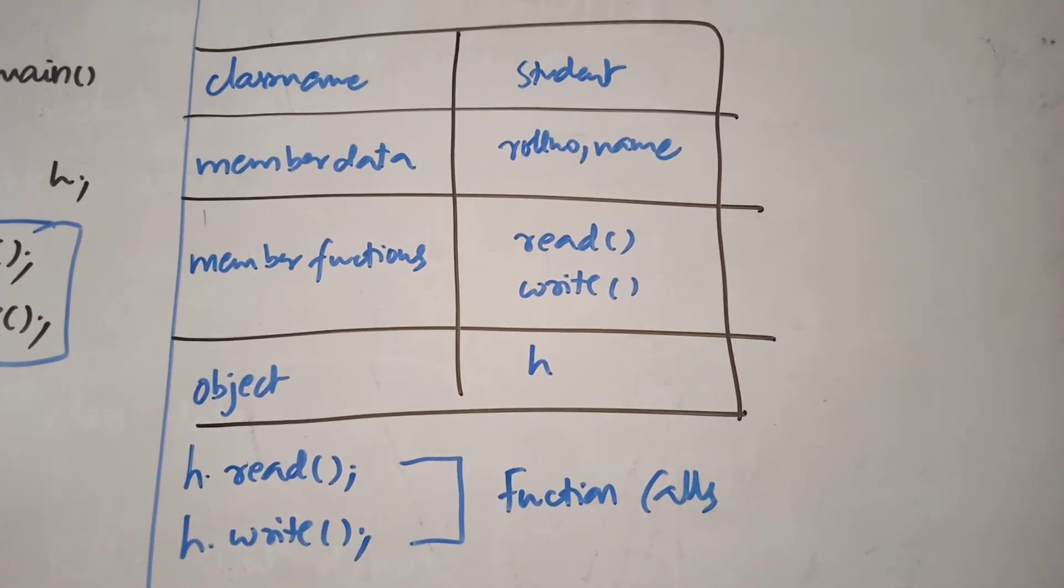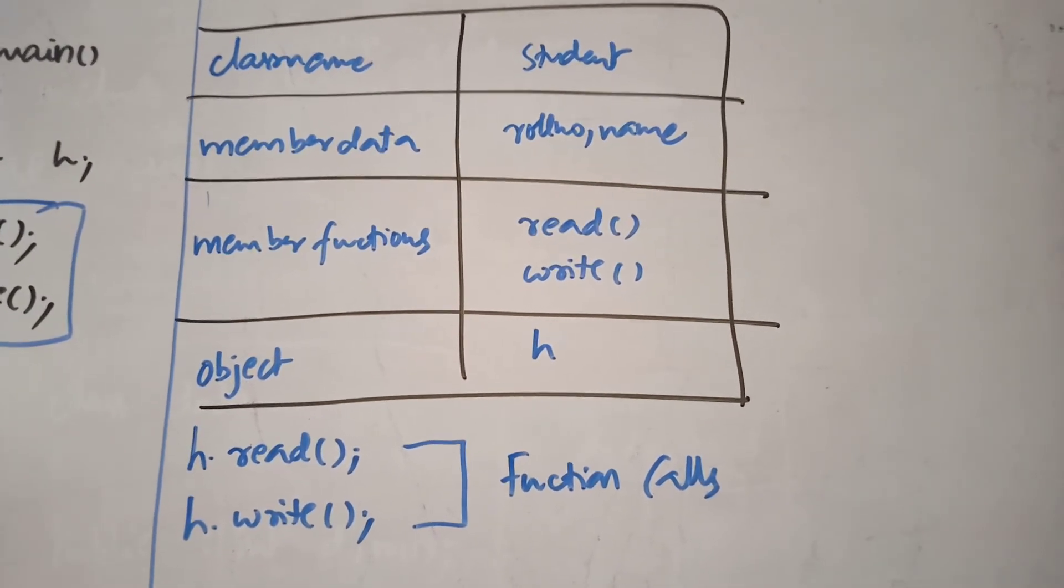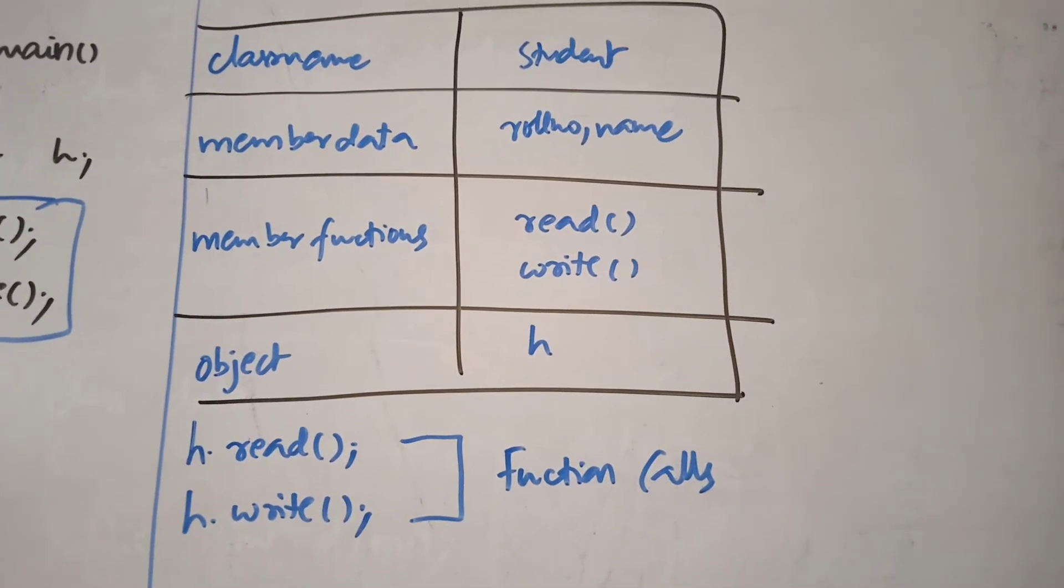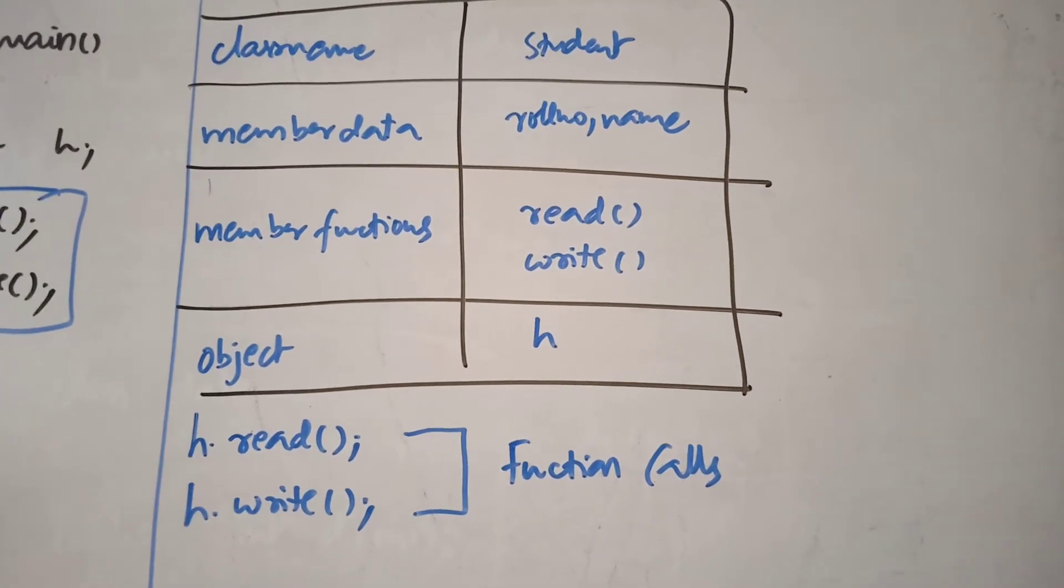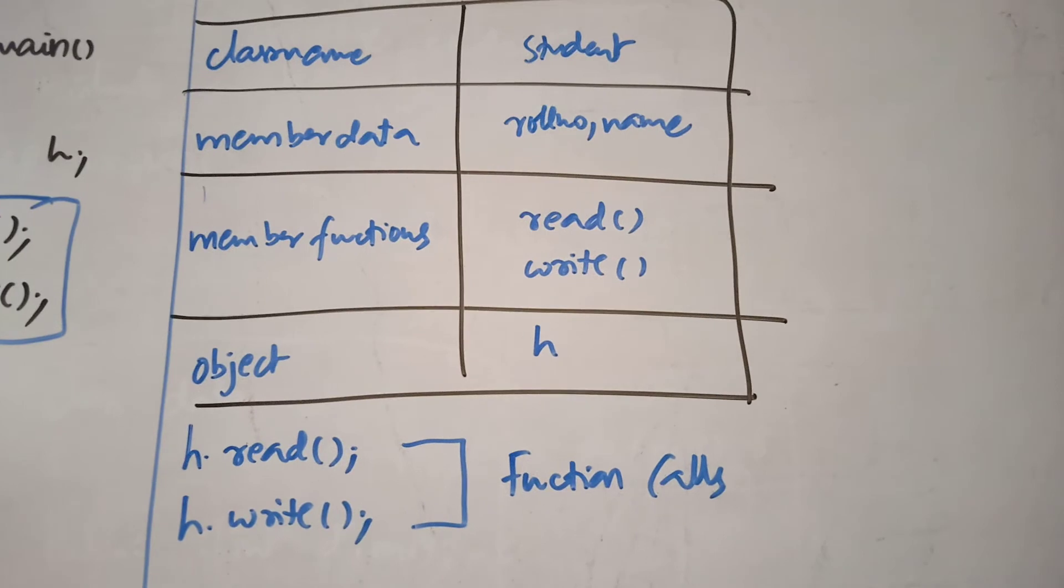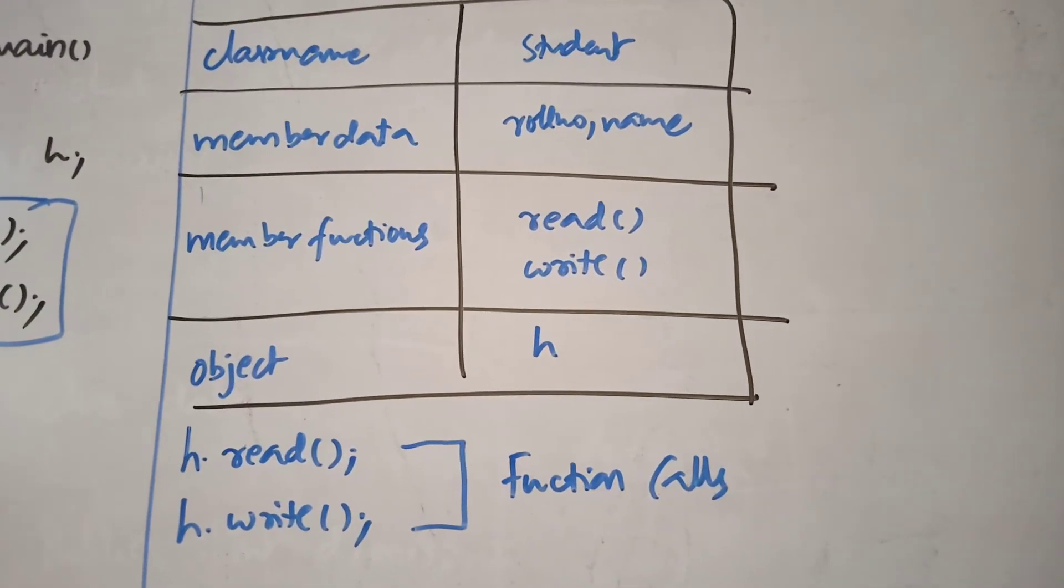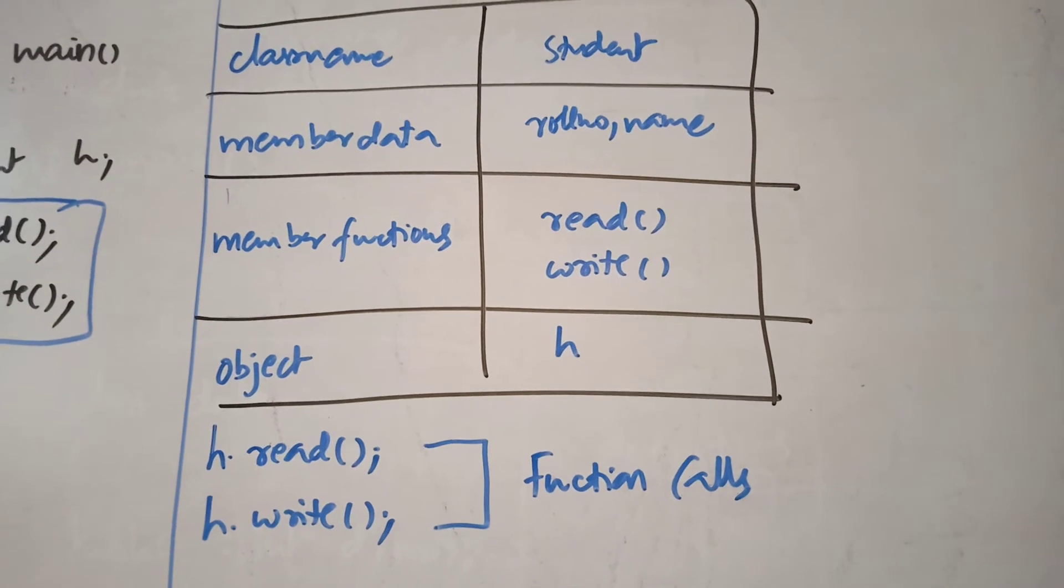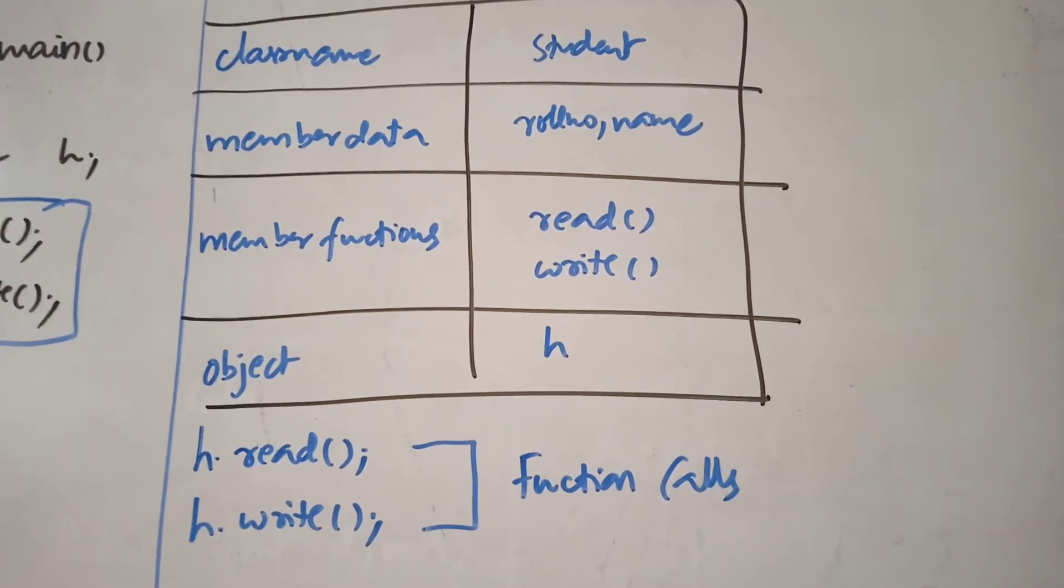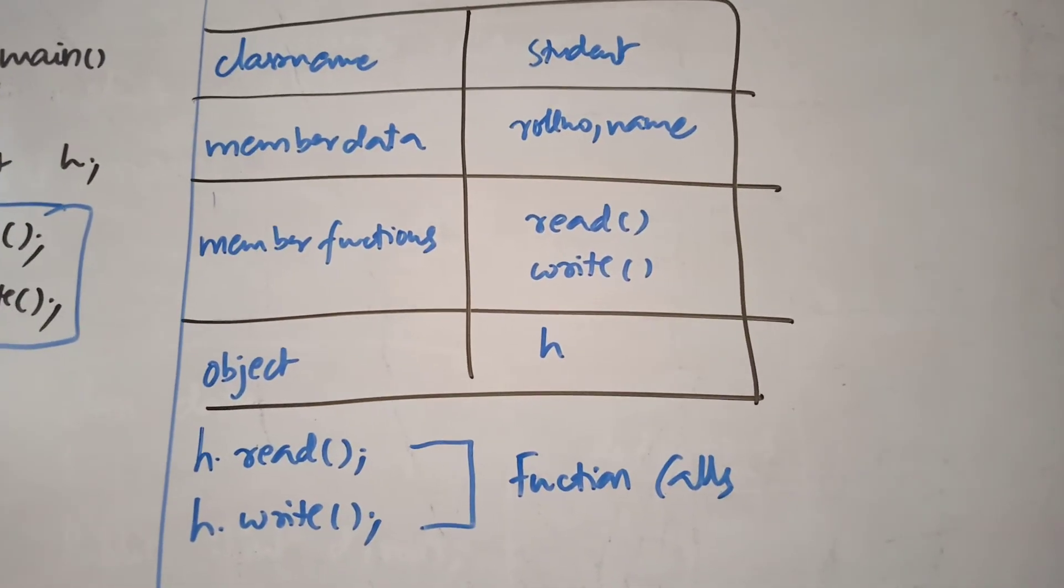Class name is student and roll number name are member data. And read and write are the functions. And h.read and h.write they are the function calls. Functions play very important role in C++. You need to refer the concept of functions in C before coming to this part.